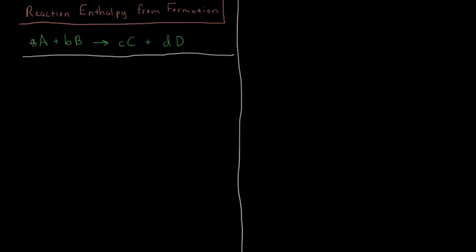So we have this reaction here where the small lowercase letters represent number of moles and the uppercase letters represent specific compounds. Our reactants are capital A and capital B, our products are capital C and capital D, and they have as many moles as their lowercase letter that precedes them.